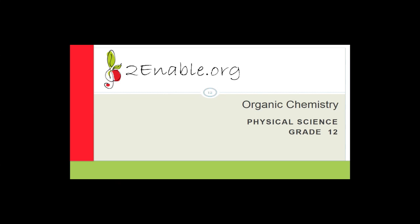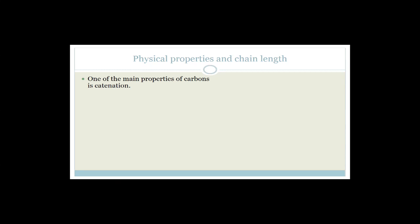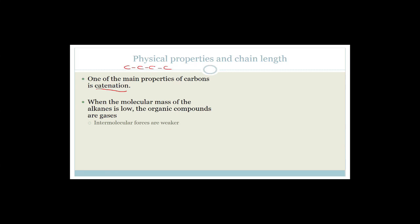Now let's go back to organic chemistry. We were talking about different properties and functional groups, and now we need to talk about chain length. One of the main properties of carbon is catenation — the ability of carbons to make long chains with itself. When the molecular mass of alkanes is low, the organic compounds are gases.